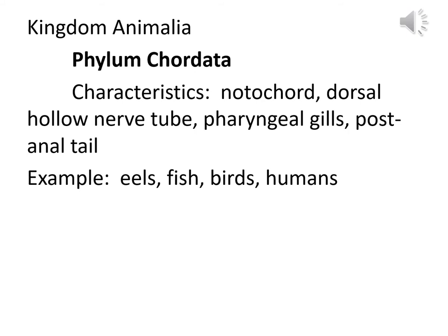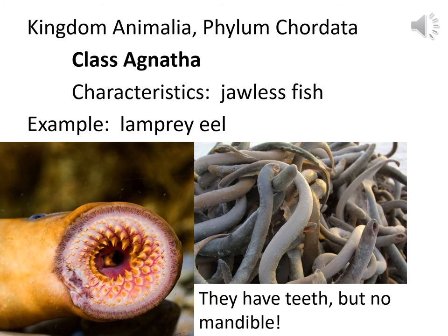Phylum Chordata includes all the rest of the things on the handout, from lamprey eels all the way to humans. Lamprey eels are in Class Agnatha, which has characteristics of jawless fish. The 'a' part is without, 'gnatha' refers to jaws, so it does say jawless. These lamprey eels do have some sort of teeth, although they don't have a mandible or maxilla — lower or upper jaw. The teeth just kind of stick into the gums, and with that yellow color they probably need to brush a little better.